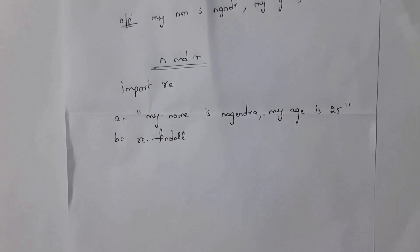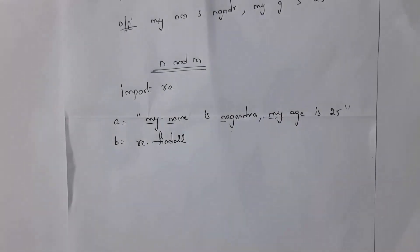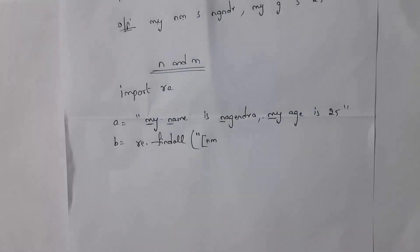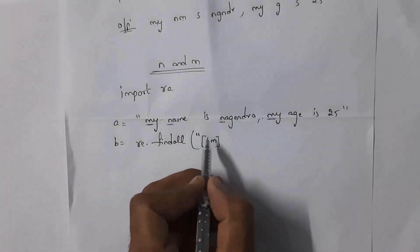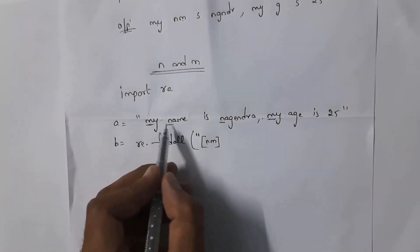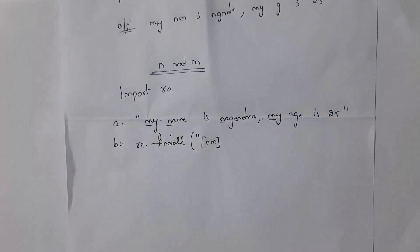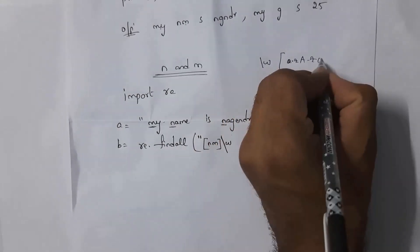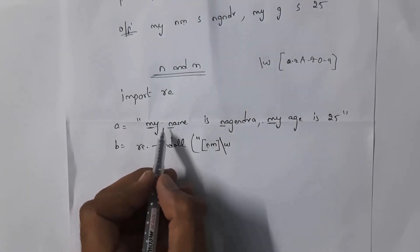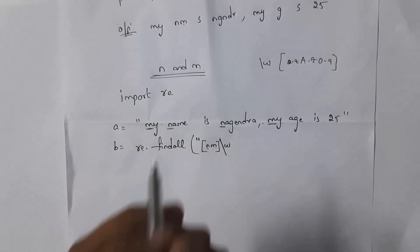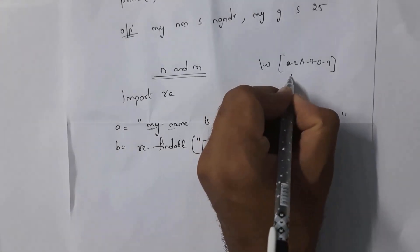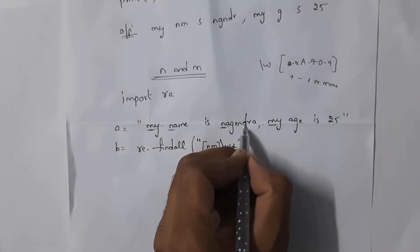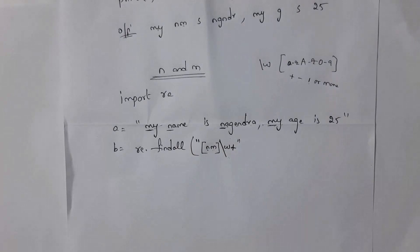Next, write a Python program to find words that start with n and m. For example, from 'my name nagendra mike', the output should be: my, name, nagendra, my. Write b equal to re.findall. Inside square brackets write [nm] to match words starting with n or m. To print the complete word, write \w — which represents a-z, A-Z, and 0-9. Add + for one or more characters.